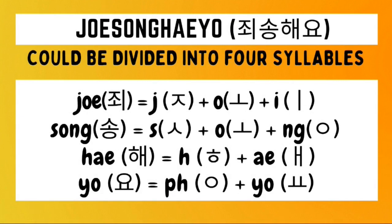How do we spell joesonghaeyo in Hangul? Let's start with the first syllable. We need to draw a jiyot character followed by an o character followed by an e character. The combination of the o and e characters results in the 'we' sound. For the second syllable 'song,' we draw a jiyot character followed by an o character. For the last syllable 'yo,' we draw a no-sound placeholder followed by the yo character itself, then combine the Hangul for each syllable.